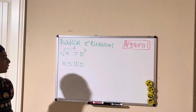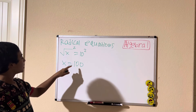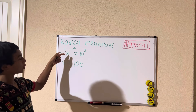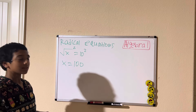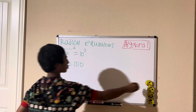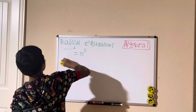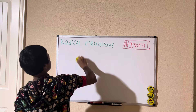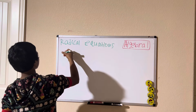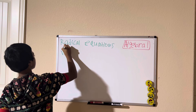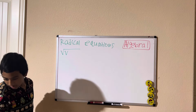And if you want to plug that in: the square root of 100 is indeed 10, so that is true. Let me give you some other examples. Let's say we have the square root of v minus 4 equals 3.